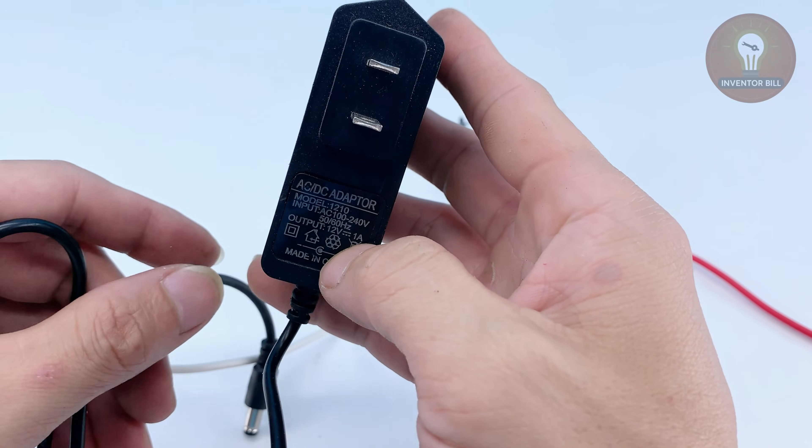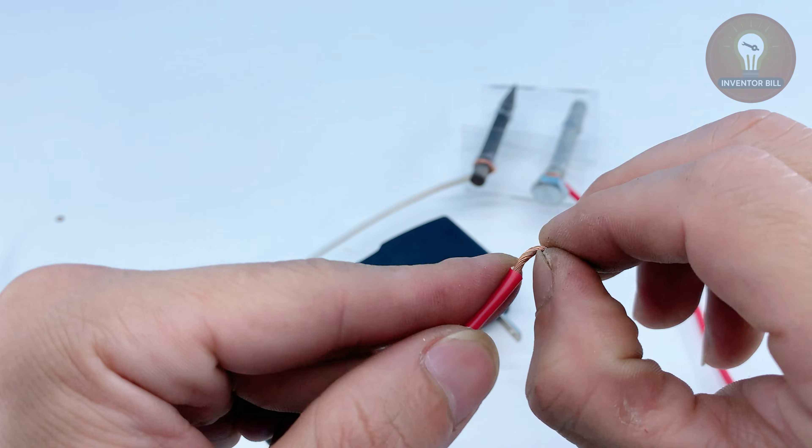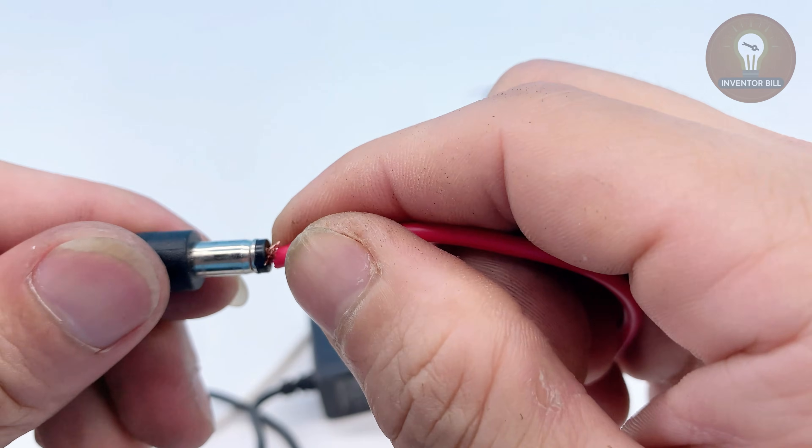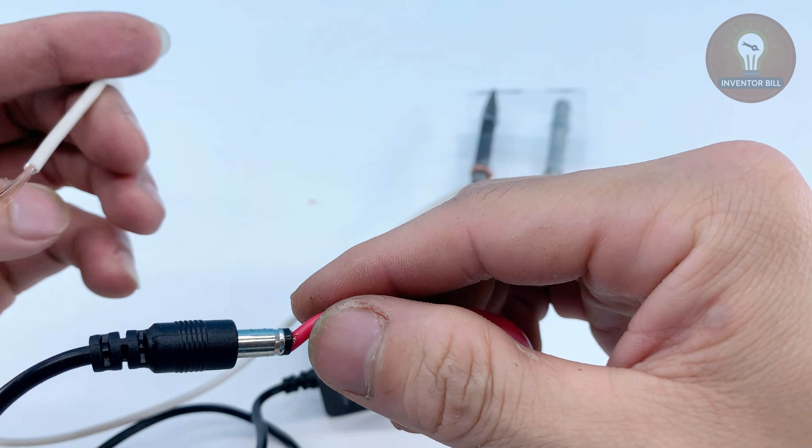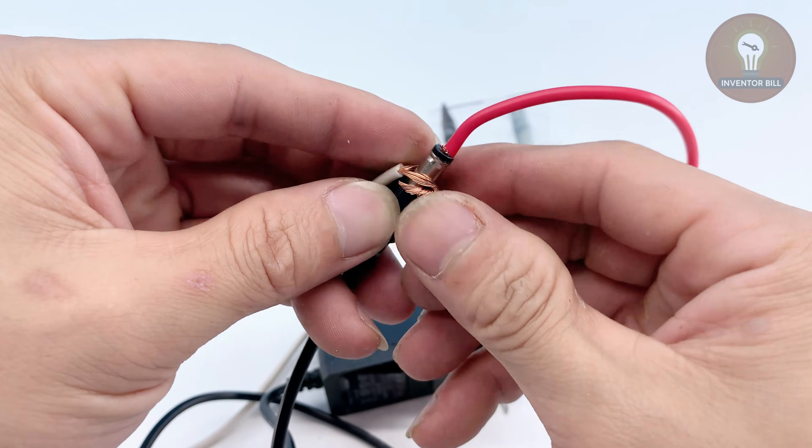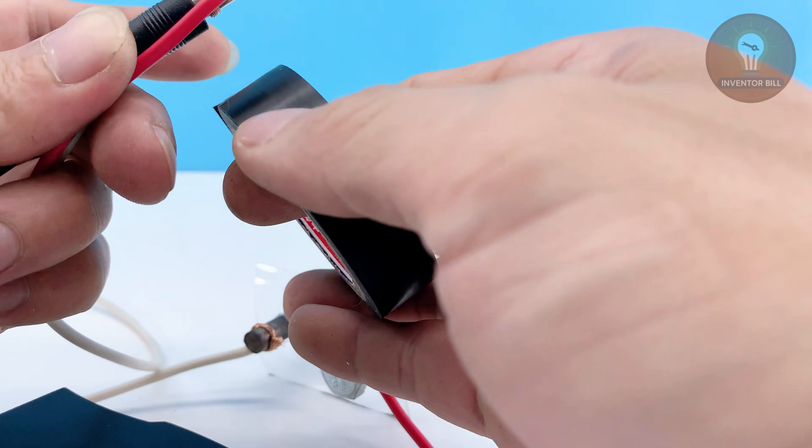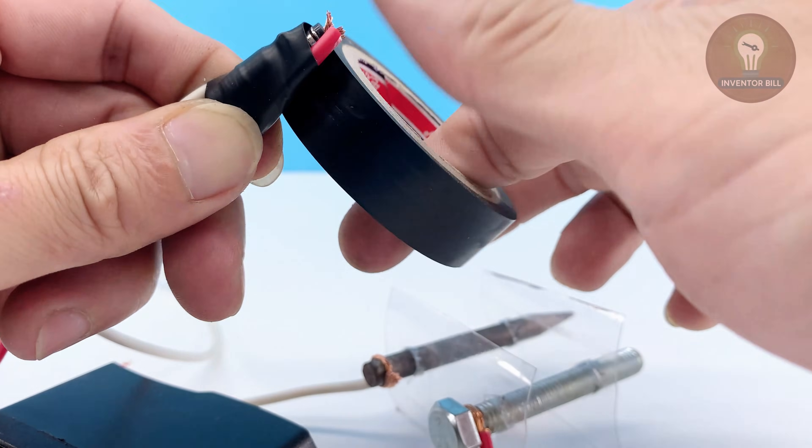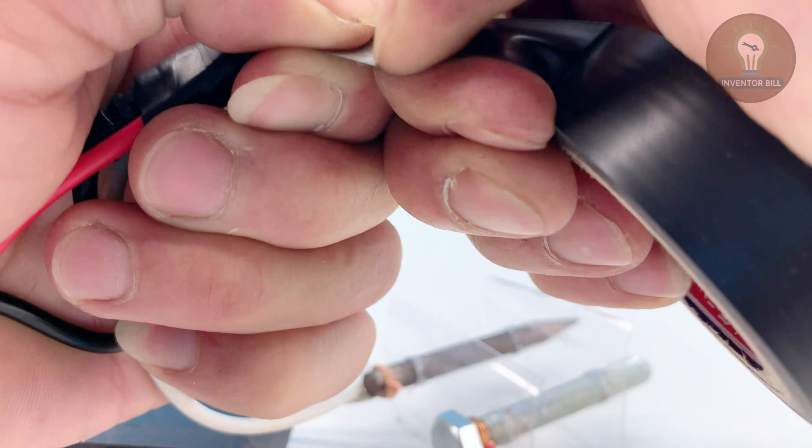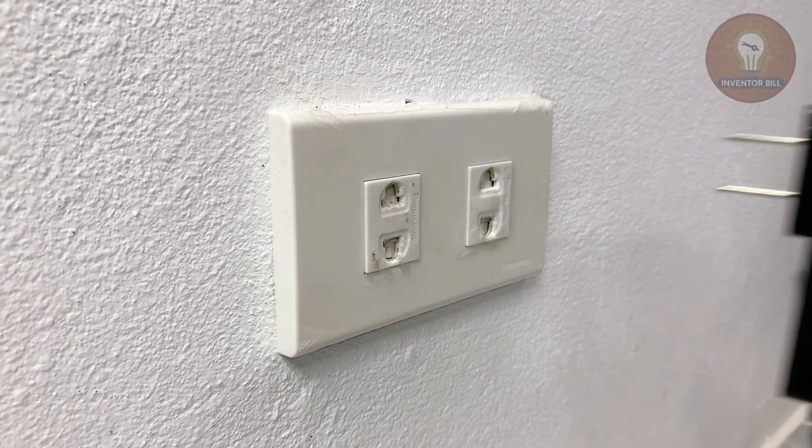Now let's bring the setup to life. Take a 12 volt, 1 amp charger, the kind used for small devices. Insert the red wire into the positive terminal of the charger plug, and wrap the white wire tightly around the metal shell of the plug. Use electrical tape to hold everything firmly in place so nothing moves.